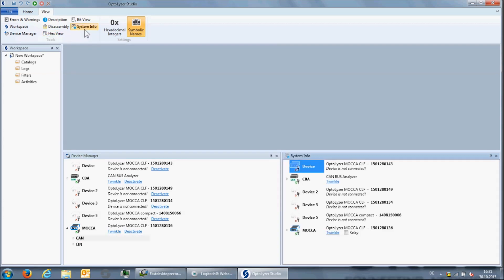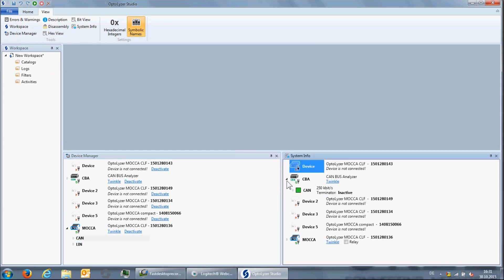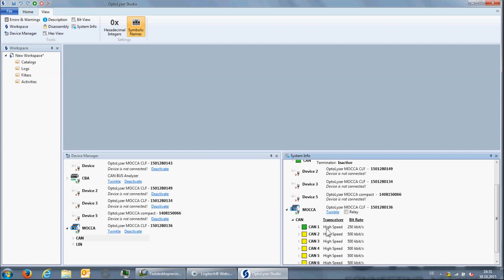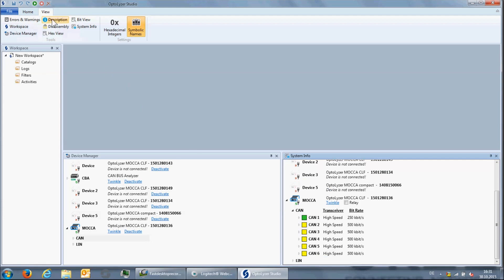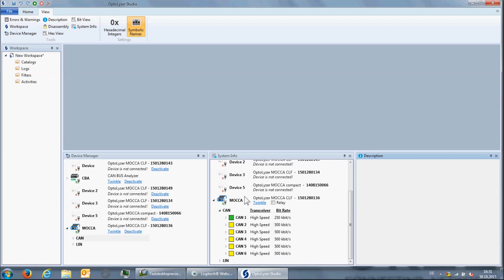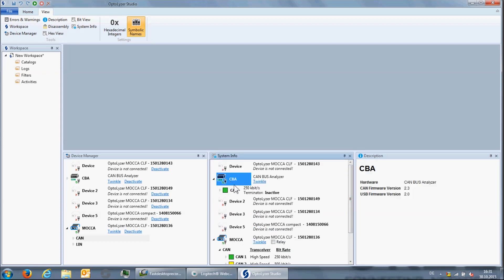Another view that can be helpful is the System Info view. Here, we can see the current status of the hardware interfaces and obtain some statistics about sent and received messages. The description view, on the other hand, shows additional information about active objects, for example, the firmware versions of the hardware interfaces.